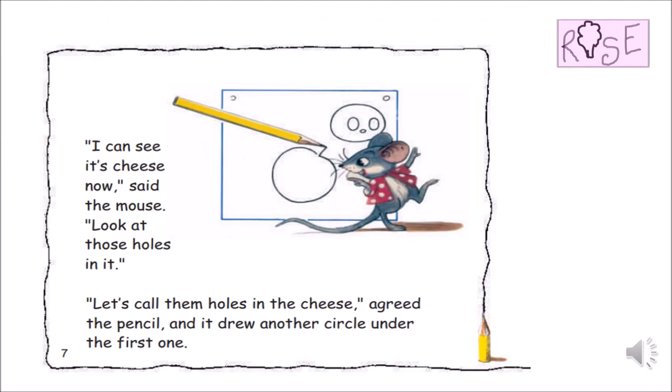I can see it's cheese now, said the mouse. Look at those holes in it. Let's call them holes in the cheese, agreed the pencil.